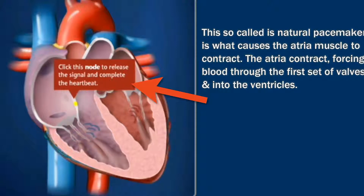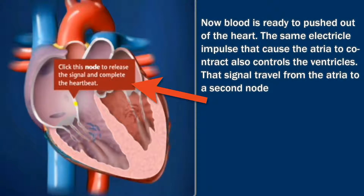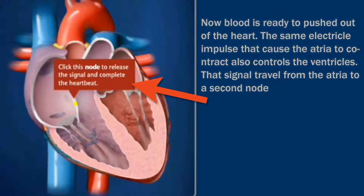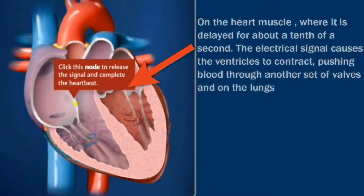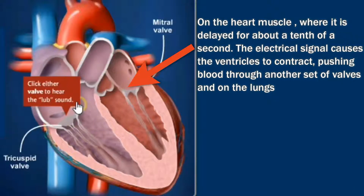Now the blood is ready to be pushed out of the heart. The same electrical impulse that caused the atria to contract also controls the ventricles. The signal travels from the atria to a second node on the heart muscle, where it is delayed for about a tenth of a second. Now let's click this node to release the signal and complete the heartbeat.